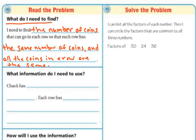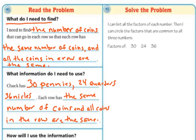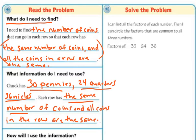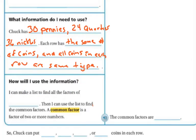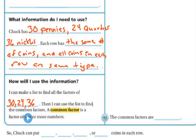What information do I need to use? Looking back in the problem, Chuck has 30 pennies, 24 quarters, and 36 nickels. And just like it says, I need the same number of coins in each row, and all the coins in the row would be the same type. So how will I use this information? I can make a list to find all of the factors of 30, 24, and 36, and then use that list to find the common factors.